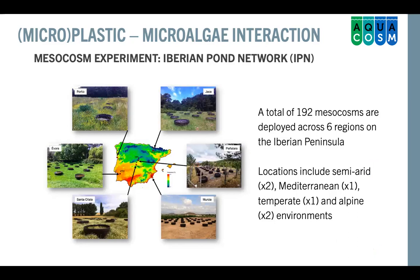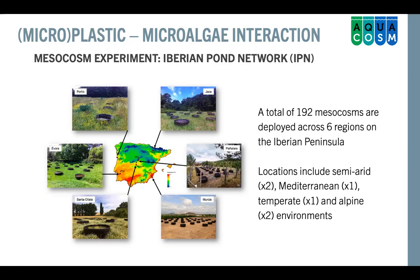This study was funded through AQUACOSM, a European network that allows people without access to mesocosm facilities to access one in Europe. The experiment was performed within the IBERIAPOND network in Spain and Portugal, which includes mesocosms across six different climatic regions — semi-arid, Mediterranean, temperate, and alpine environments. We used four of these six locations. To prevent contamination in the experiment, we prepared enclosures with large microplastics visible by the naked eye and incubated them in the different mesocosms and in the environment within the IBERIAPOND network.